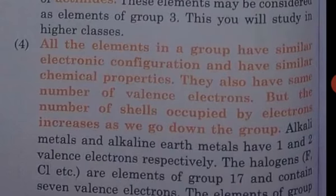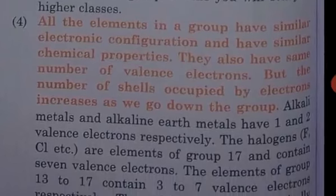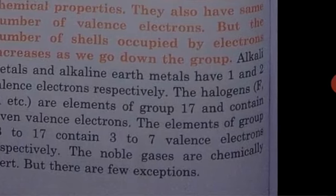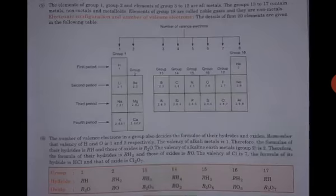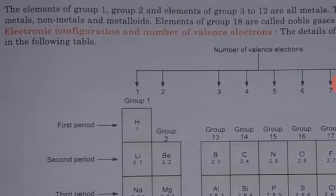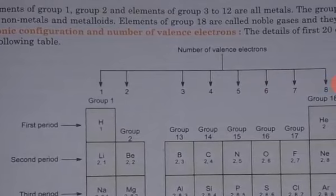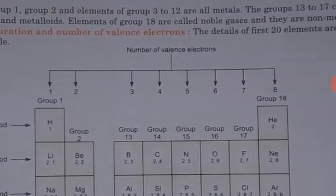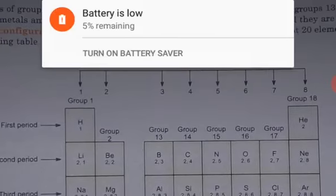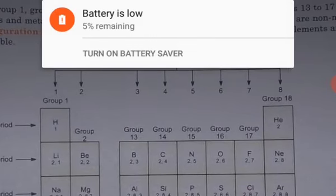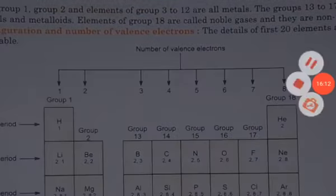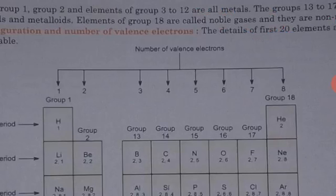The elements having atomic numbers 58 to 71 are called the lanthanoids, and the elements having atomic numbers 90 to 103 are called the actinoids. All the elements in a group have similar electronic configuration. The elements of Group 1 and Groups 1 to 12 are all metals. Groups 13 to 17 contain metals, non-metals, and metalloids. The elements of Group 18 are called noble gases and they are non-metals.